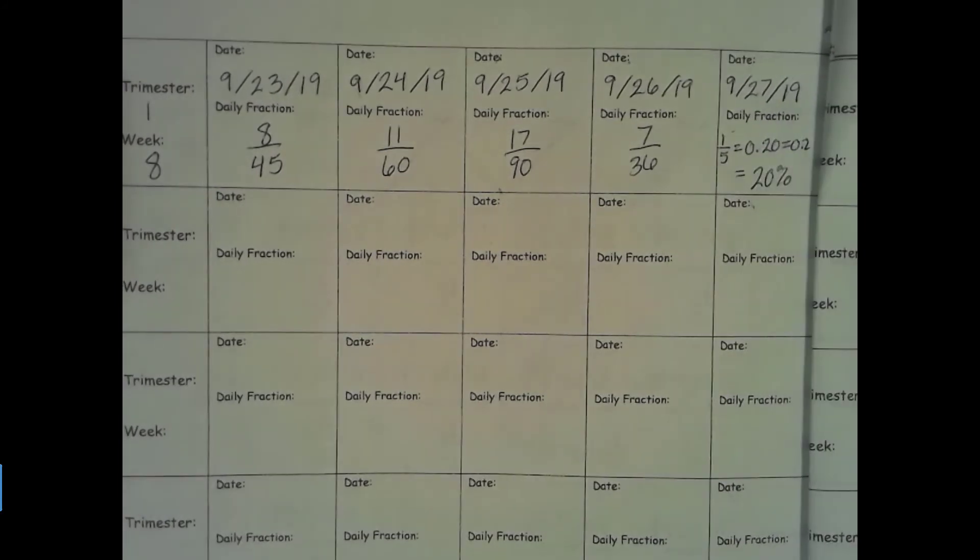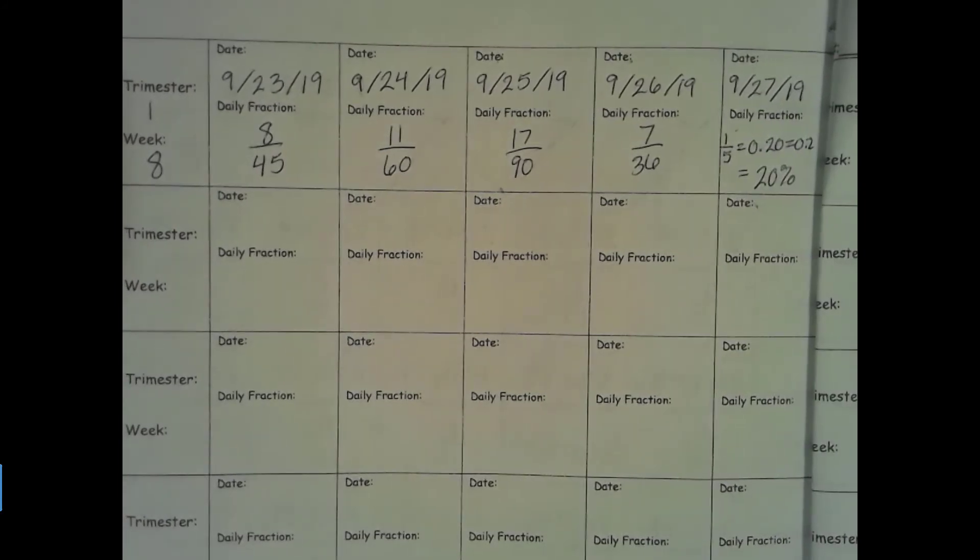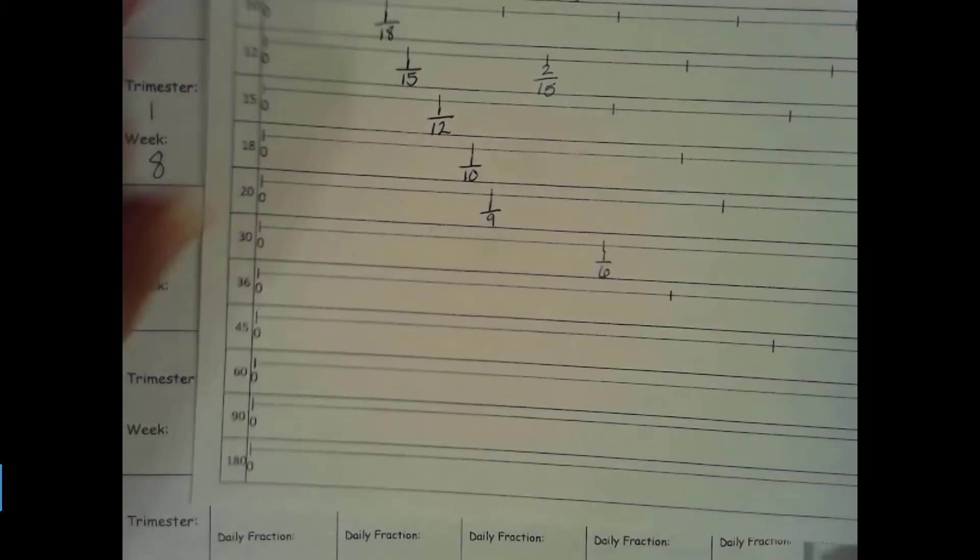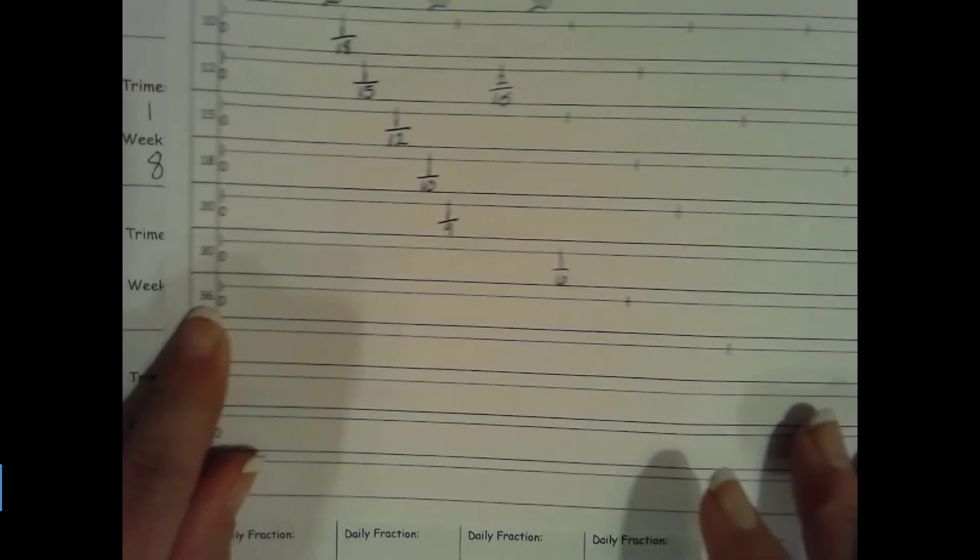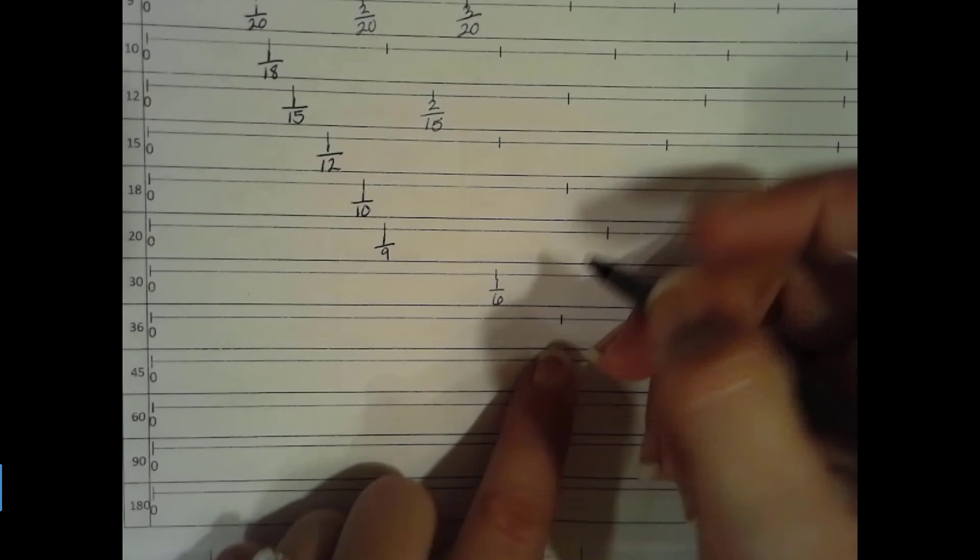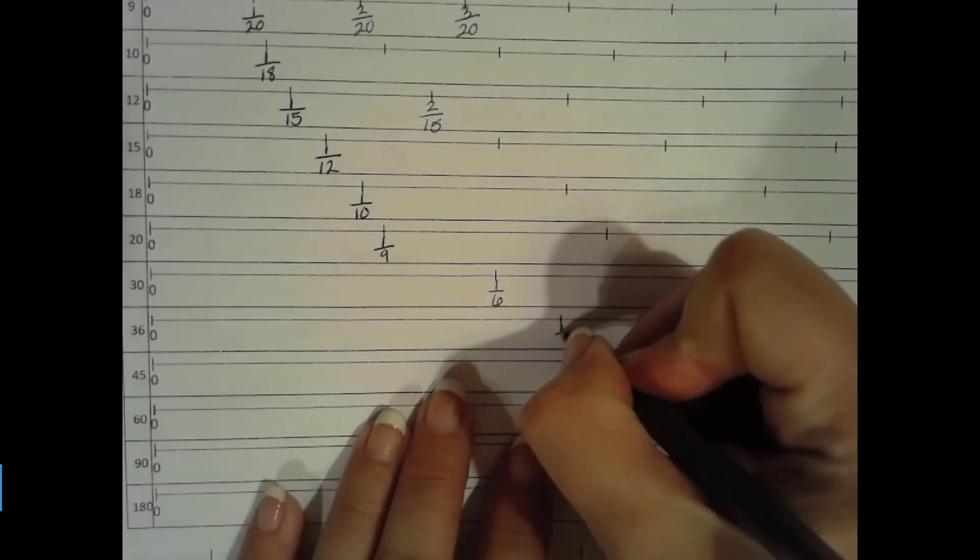Okay, let's go ahead and get out our number line. We did groups of 36. So that's way down here. Groups of 36. So we have completed 1 fifth of our school year.